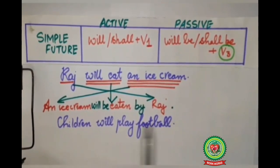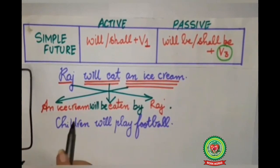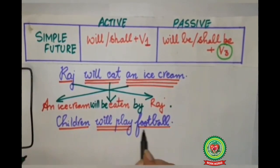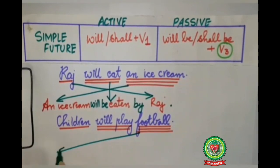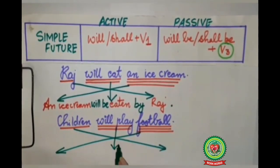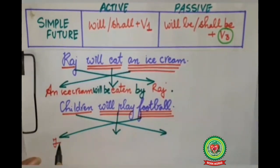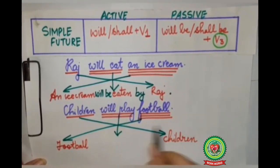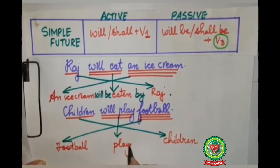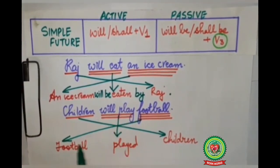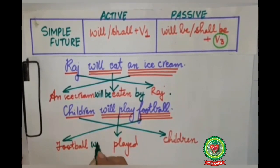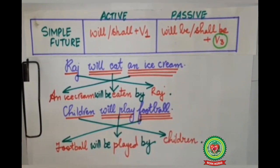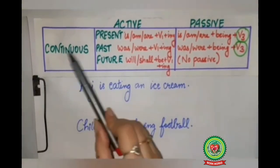Similarly in the second sentence, we identify subject, verb, and object. 'Children will play football.' Who? Children — subject, single underline. 'Will play' — action word, double underline. What? Football — triple underline. Football will come in the beginning, children will go to the last, 'play' changes to 'played', and 'will' changes to 'will be'. So the sentence becomes: 'Football will be played by children.' Full stop.